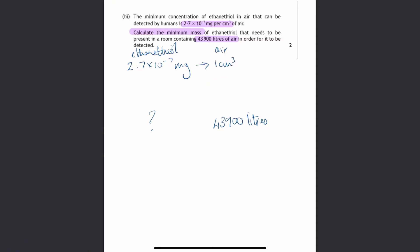So if we switch this around, one centimetre cubed of air would need 2.7 times 10 to the minus 7 milligrams in it for it to be detected. But we want to find out how much we would need in this much air. So we need to make sure these units match. We're going to change that into centimetres cubed. So in order to do that we times by a thousand. So that's adding on three more zeros. Then to go from 1 up to 4,390,000 we times by 4,390,000. So we do the same on the other side.